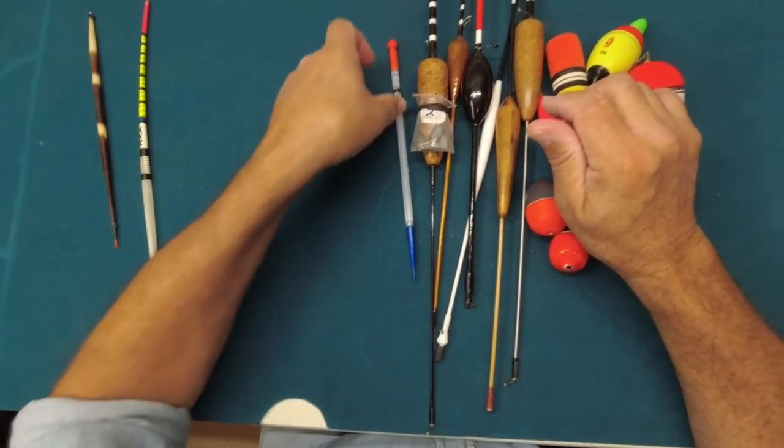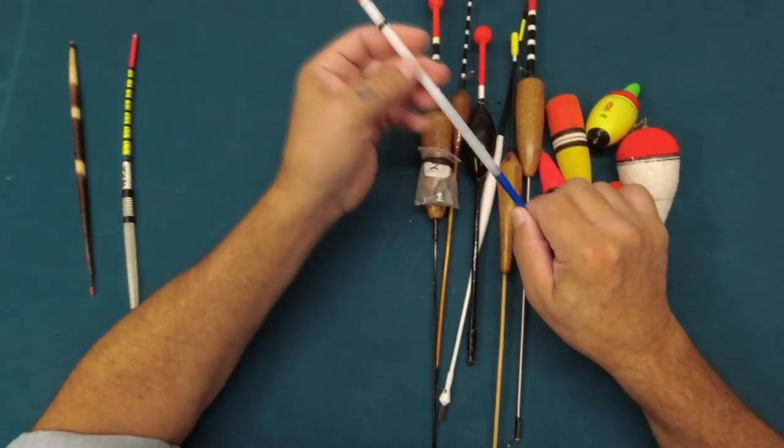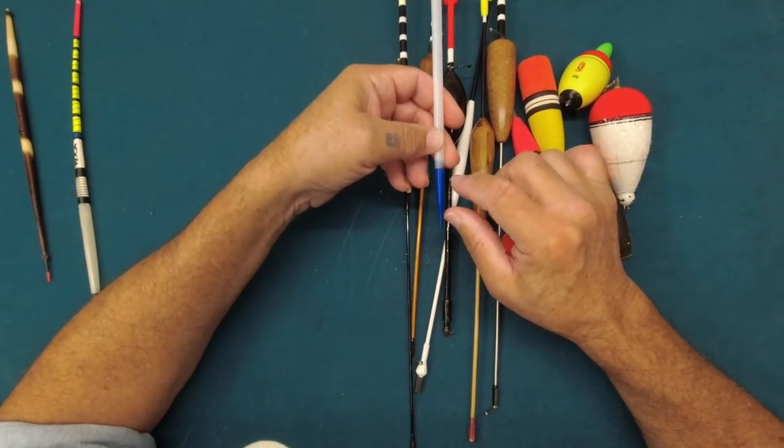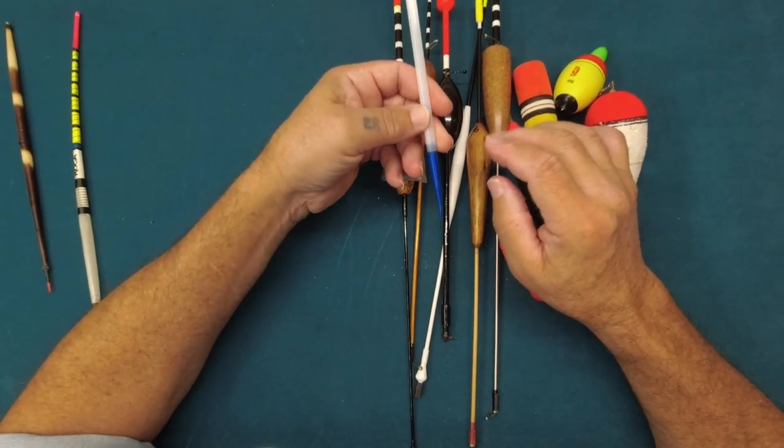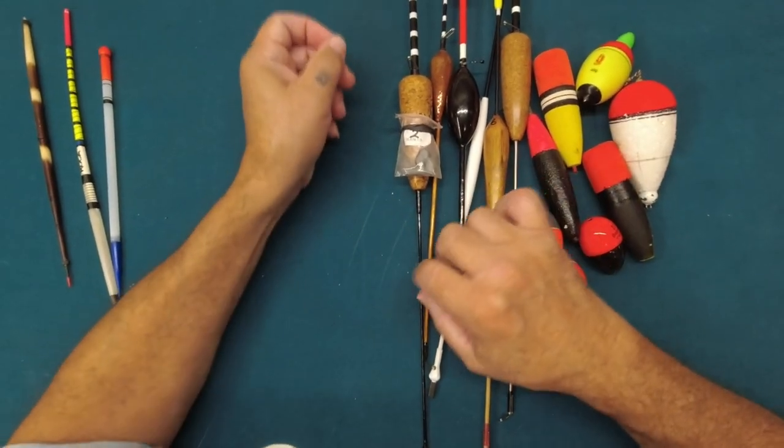This one here I bought. It's just a plastic tube that's watertight on both ends. I caught mullet on that one before, nice float too.